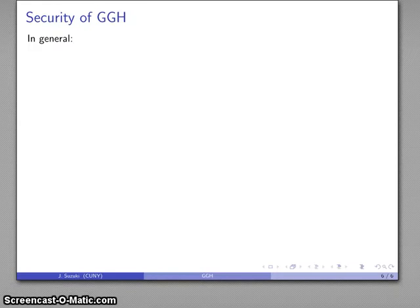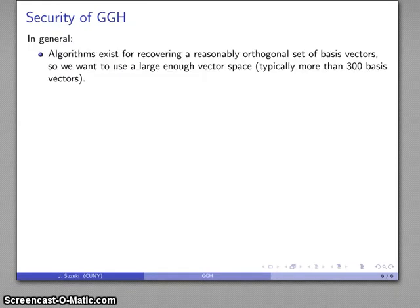Now, let's think a little bit about the security of GGH. In general, we will see that algorithms do exist for recovering a reasonably orthogonal set of basis vectors. So in general, we want to use a large enough vector space. And typically, we're talking about more than 300 or so basis vectors.